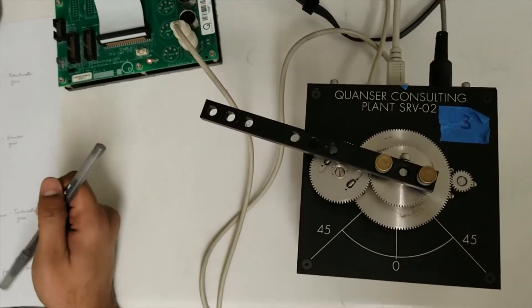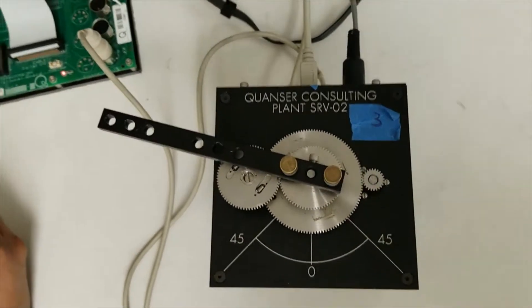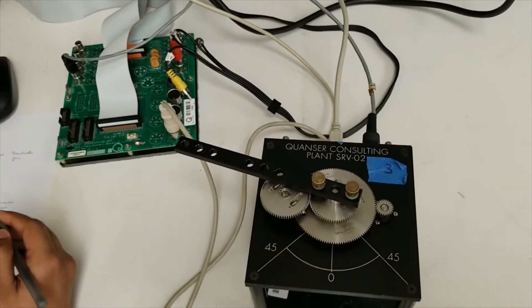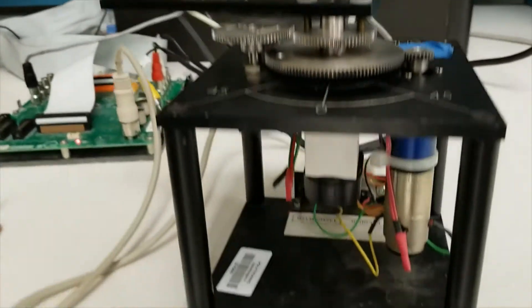For experiment one, we'll be measuring the angle using a potentiometer. As you know, a potentiometer is a variable resistance.